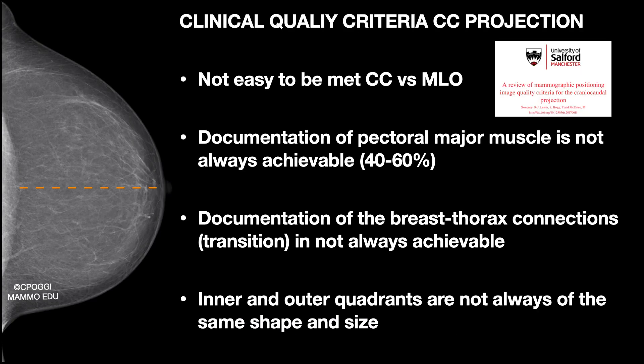Surely the quality criteria are very difficult to meet, especially for the CC view. I invite you to read this paper — you'll find the link and the bibliography at the end of this lesson. It's not always possible to show pectoralis major muscle; if everything goes right, you don't exceed 50% of patients. Also, achieving the documentation of the breast-thorax connections is not easy.